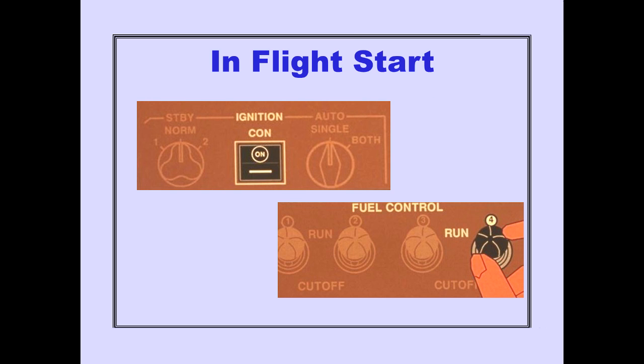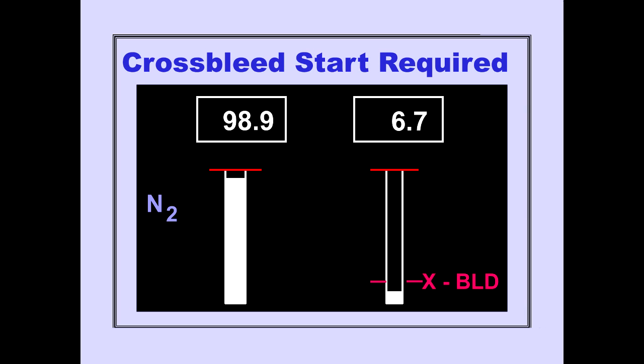Placing the fuel control switch to run provides the fuel and ignition to relight the engine. The cross bleed enunciator and fuel on command indicator are displayed when the airplane's airspeed is not high enough for a windmilling start. A cross bleed start is required.